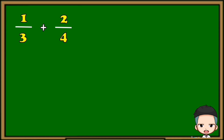Let's try this example: 1 over 3 plus 2 over 4. As you can see, the denominators are different. If the denominators are different, the first thing we need to do is to multiply their denominators. So 3 times 4 is 12. Next, we're going to multiply the numerator of the first term and the denominator of the second term. 1 times 4 is 4. Then copy the operation. Next, we're going to multiply the denominator of the first term and the numerator of the second term. 3 times 2 is 6.